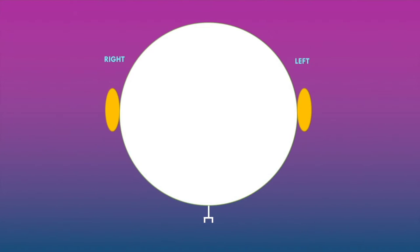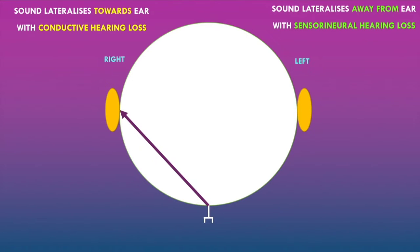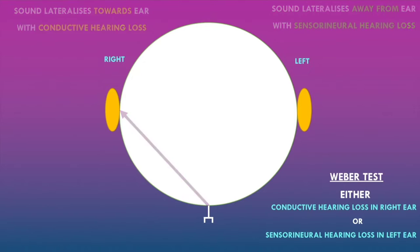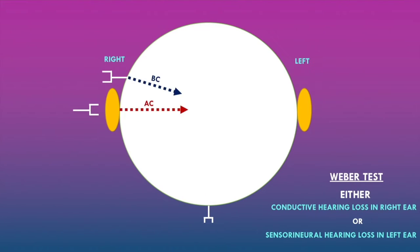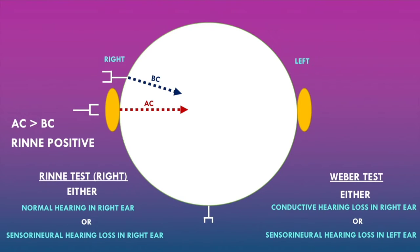Looking at the schematic diagram: the Weber test showed lateralization to the right ear, indicating either conductive hearing loss in the right ear or sensorineural hearing loss in the left ear. The Rinne test in the right ear showed air conduction greater than bone conduction — a Rinne positive test — indicating either normal hearing or sensorineural hearing loss in the right ear.